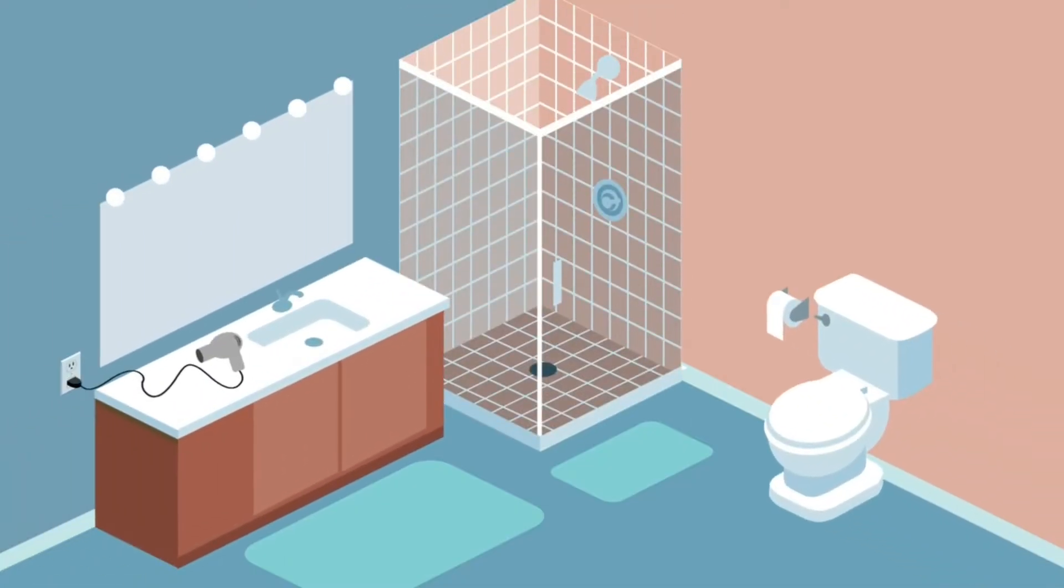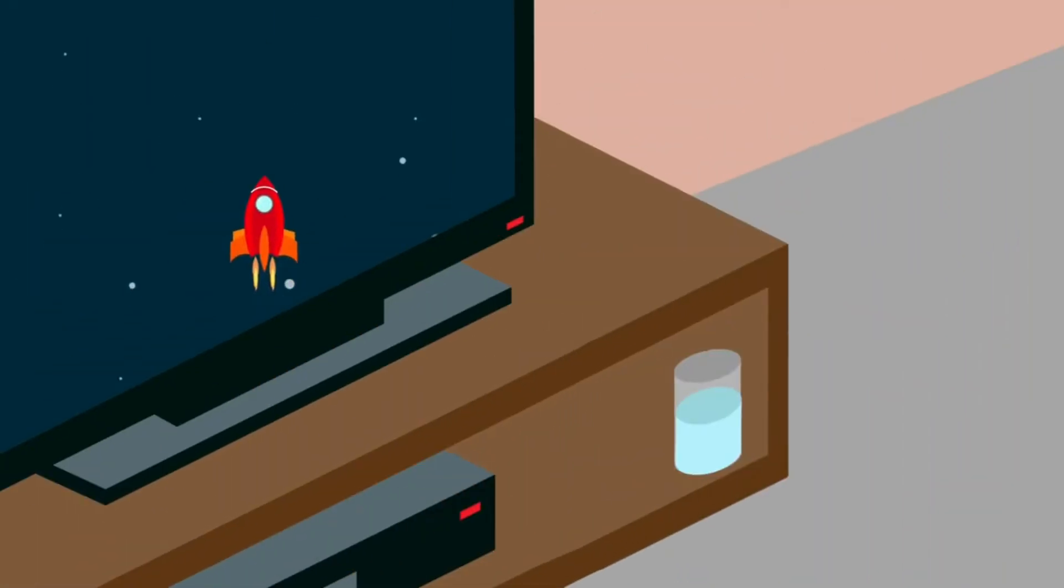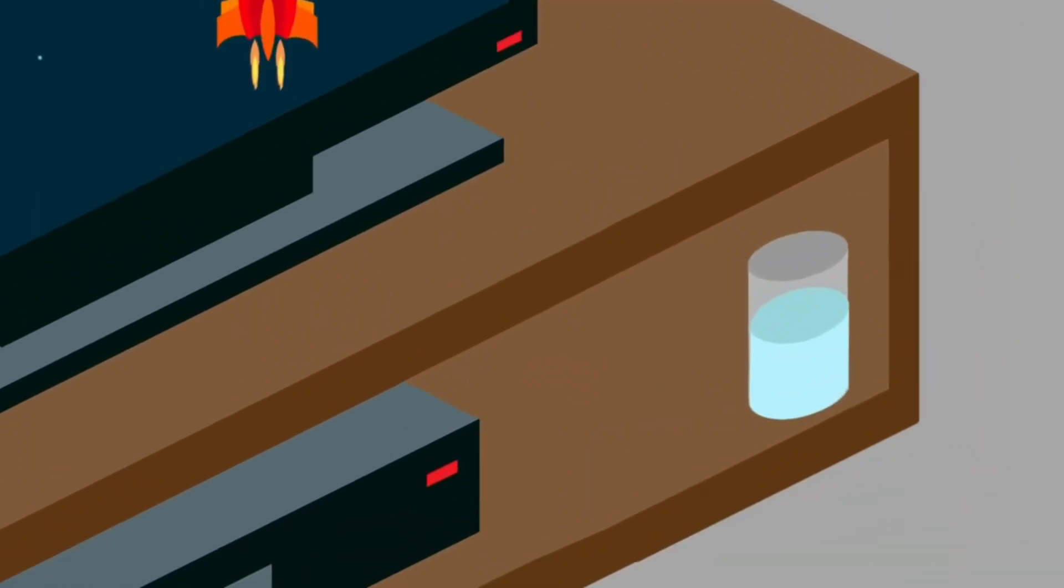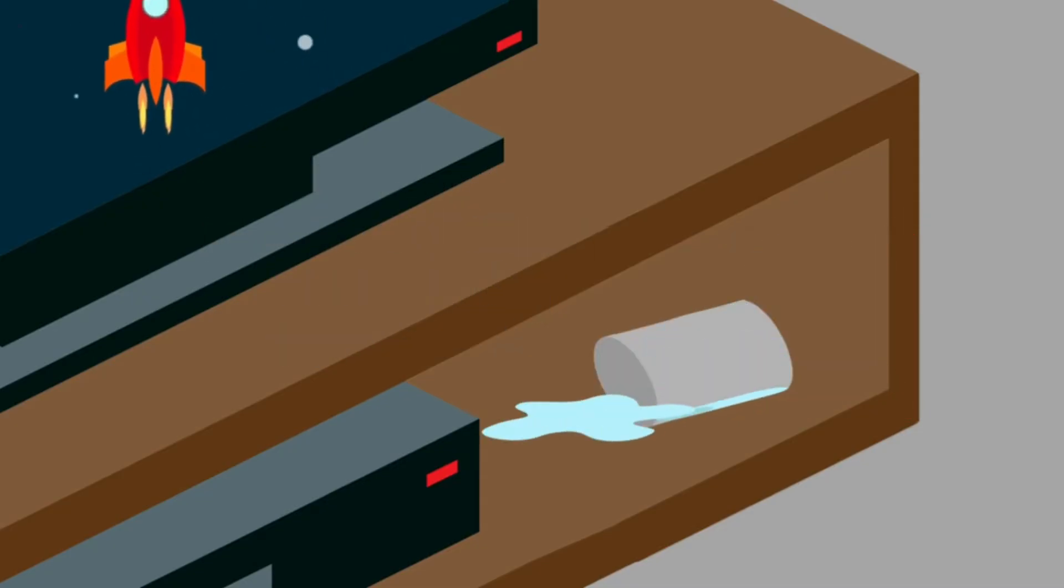Electricity and liquids do not mix. Never place electronics and appliances near water, like next to the sink or the tub. This tip applies to gaming equipment too. Never place a drink near your gaming console. Spills could result in electric shock.